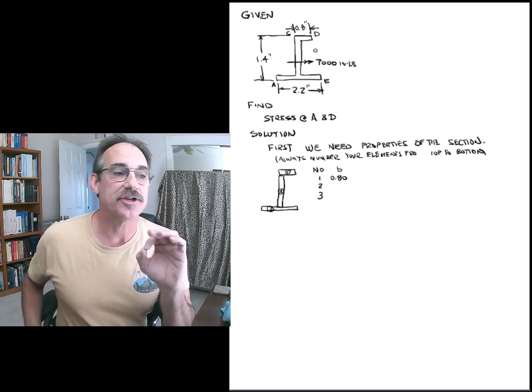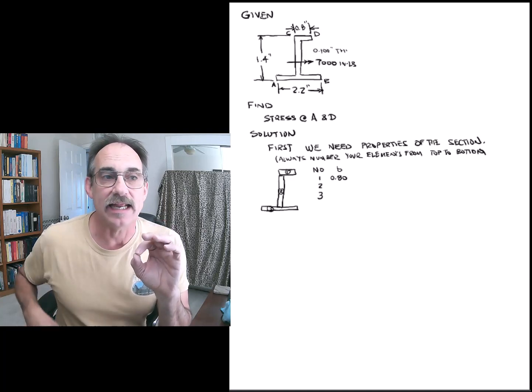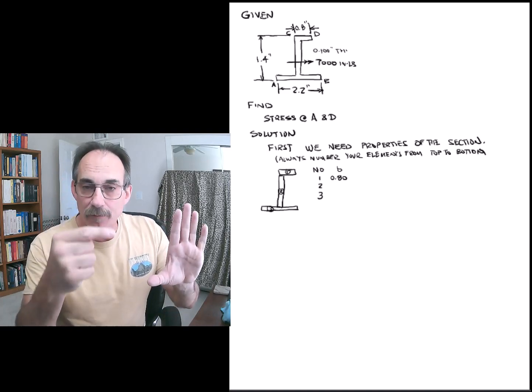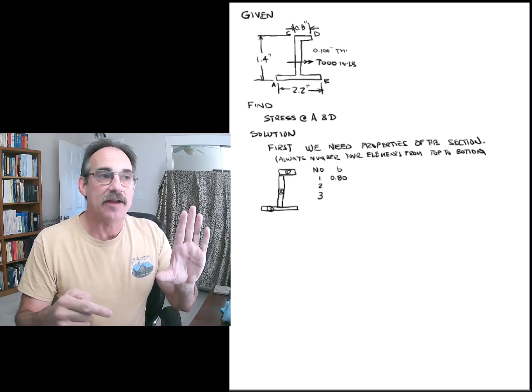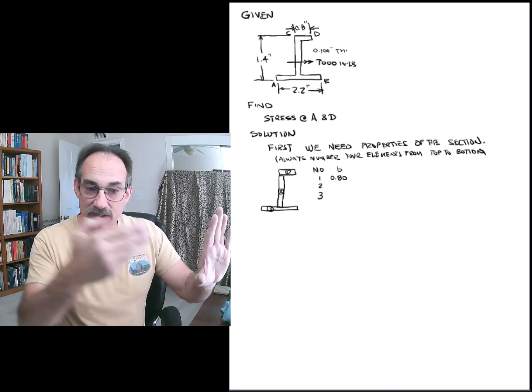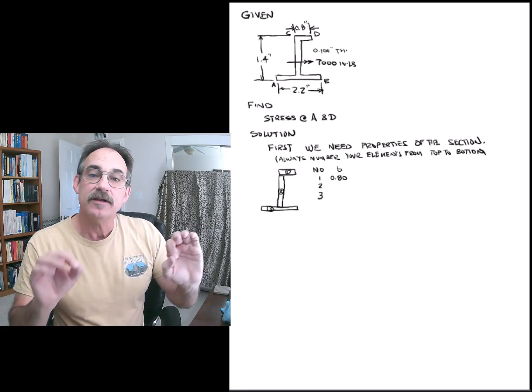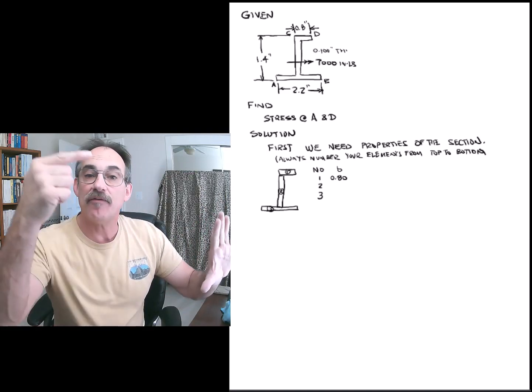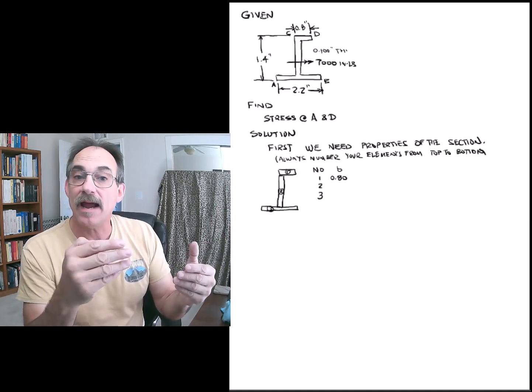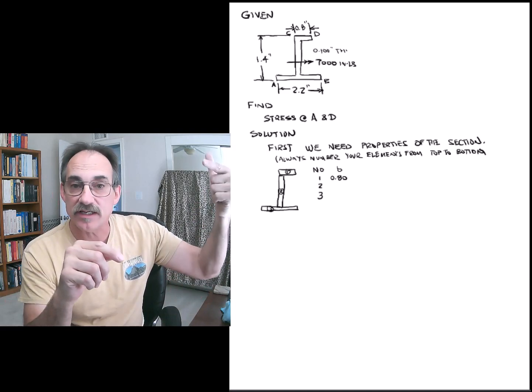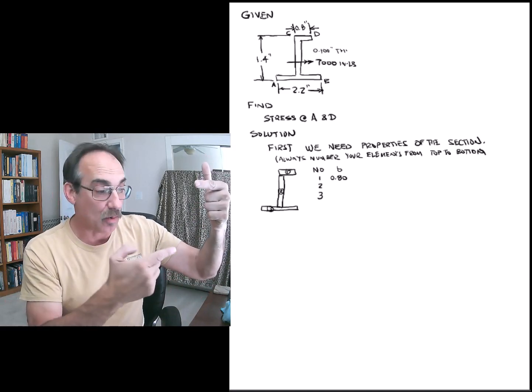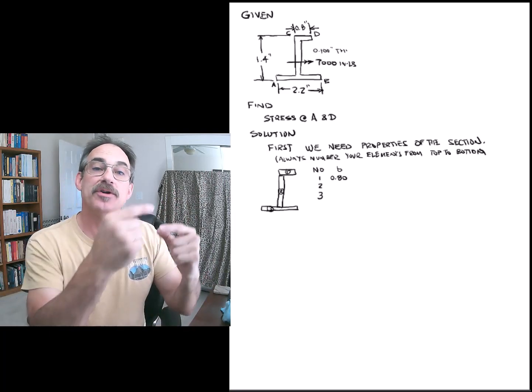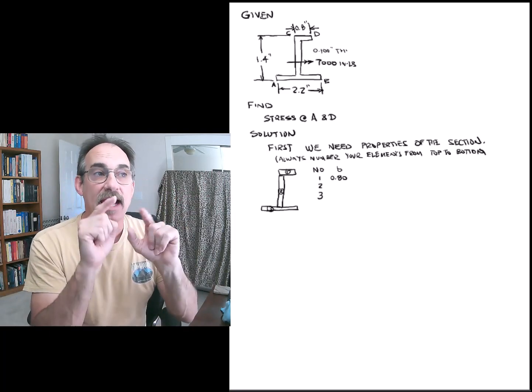By numbering the sections from top to bottom, you will find it easier when you create your table. If you number them from top to bottom in your sketch, then when you list them out from top to bottom in your figure, they will match. On the other hand, if you numbered from bottom to top, then we start with 1, and in your table, the number 1 will be at the top, and you'll tend to make more mistakes. So number your sections from top to bottom, and then put it in your table.